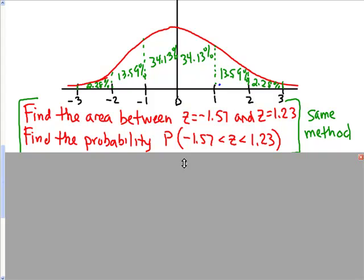So let's kind of see where they exist. Z equals 1.23 is about right here, and z equals negative 1.57 is about right here. So we want to find all this in between, and that looks like a pretty good chunk of the curve.